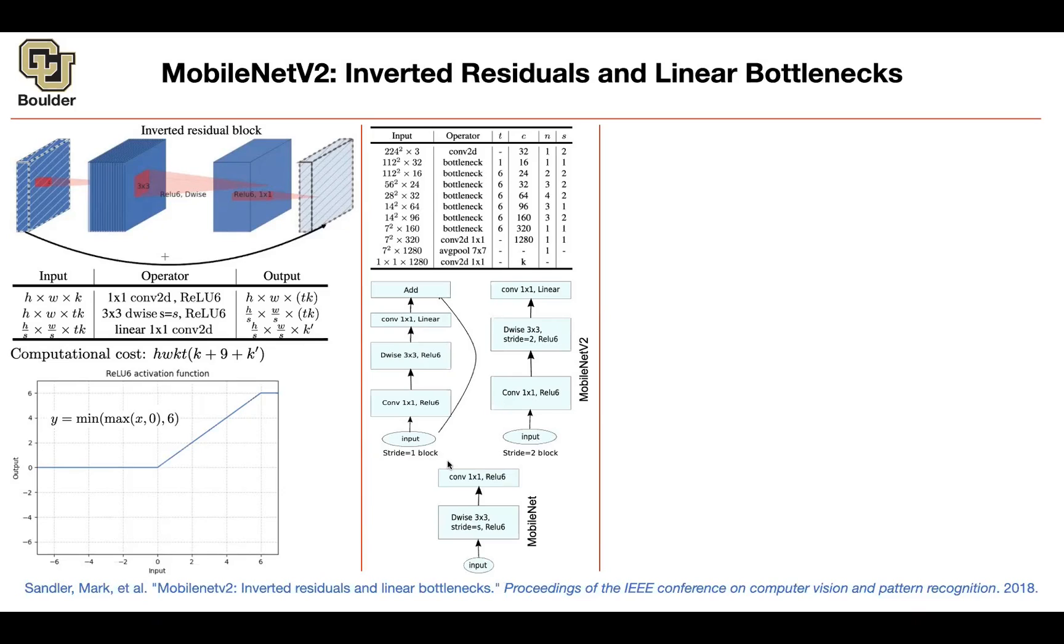And how does it compare to MobileNet? This is how it compares. For MobileNet, you had the depth-wise separable convolution, but now you are adding a one-by-one convolution here, and you are adding the residual connection.